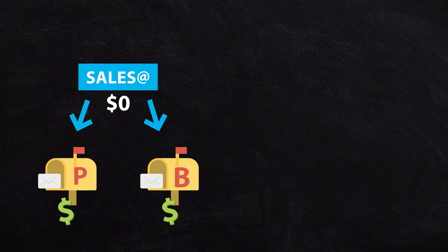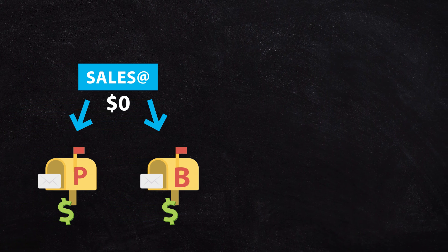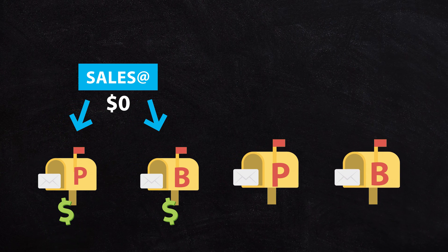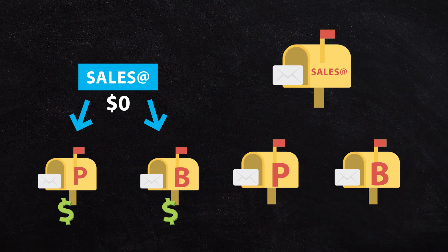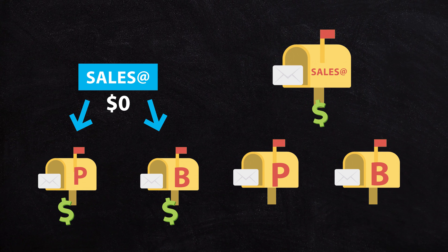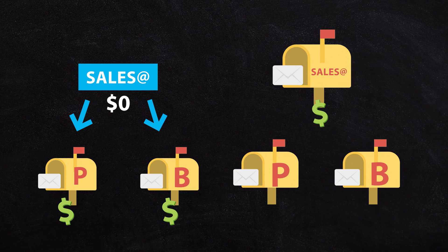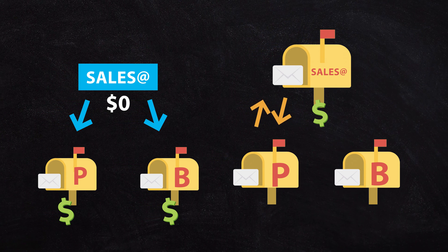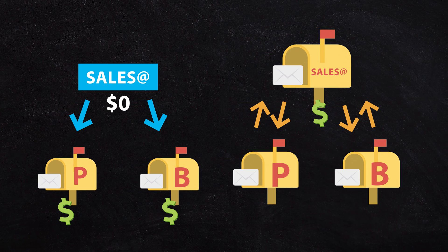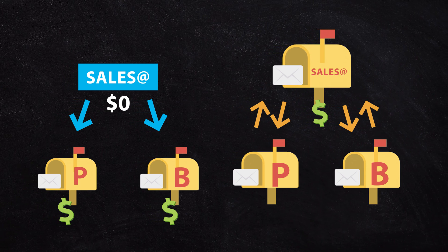That second option is to set up a shared mailbox or a delegated mailbox. When you configure a delegated mailbox, it looks a little different. We still have Peter and Bob, but this time we create a sales mailbox and actually pay for a license — set it up just like any other user. Then we delegate access from the sales mailbox to Peter and to Bob, which allows them to access that mailbox securely without needing to know the password.